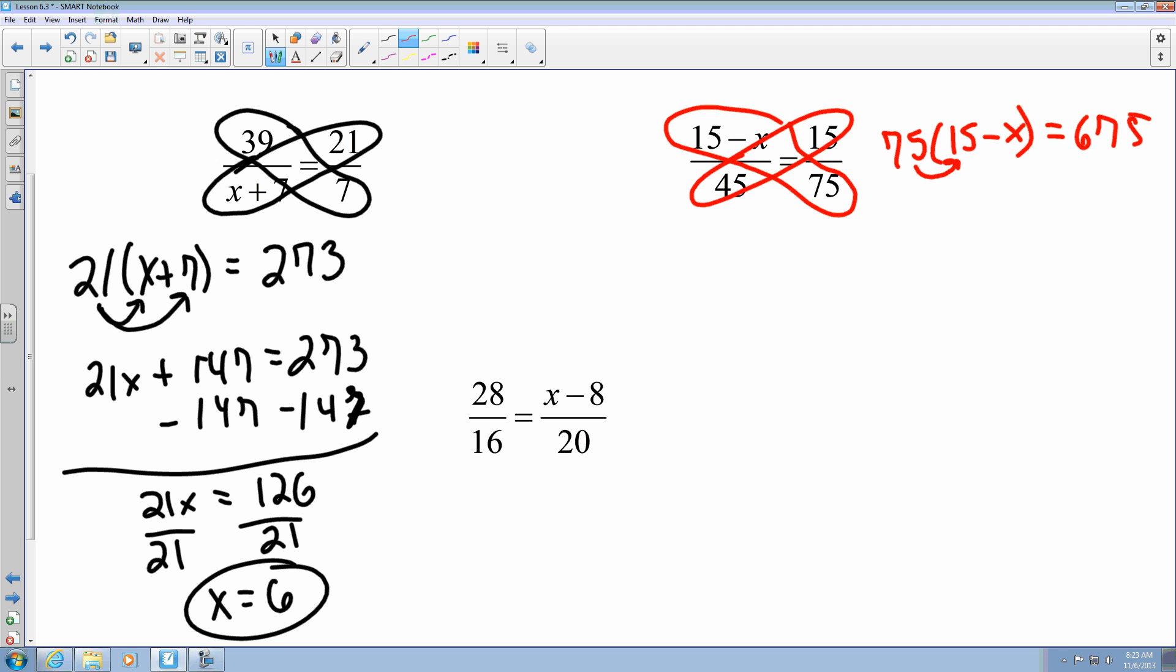Now I'm going to use the distributive property. So I'm going to take 15 times 75, which gives me 1,125 minus 75x, which equals 675. I'm going to subtract 1,125 from both sides, which gives me 675 minus 1,125, which gives me negative 450.